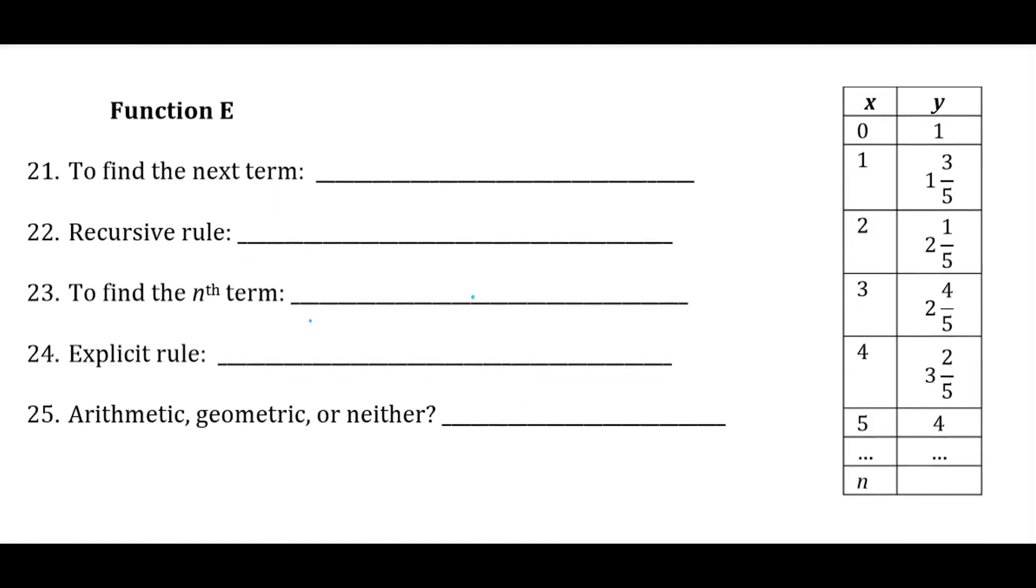So now if we look at function E, it helps me to rewrite all of these as improper fractions. So since the denominator is 5, 1 would be 5 fifths, and then we would have 8 fifths, and then 11 fifths, 14 fifths, 17 fifths, and 20 fifths. And so to me, that makes it much easier to see what's happening here as we go from one term to the next. So I can see by looking at the numerators that 3 is being added every time. And that's pretty clear and easy to see, hopefully.